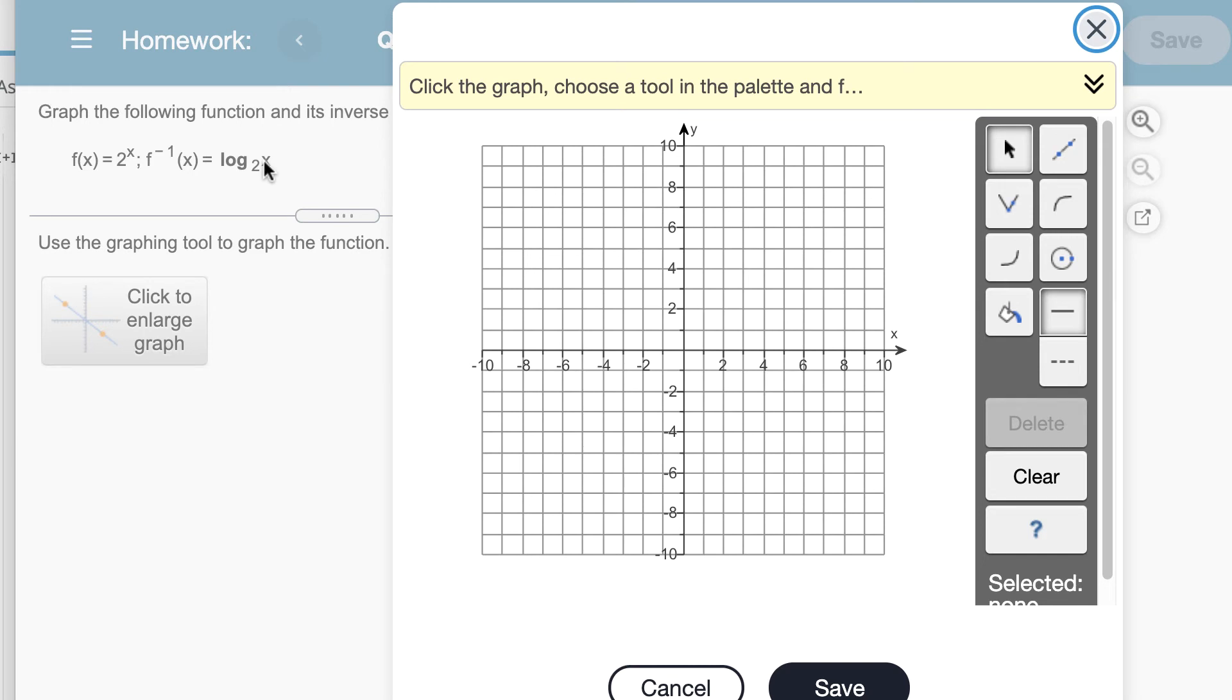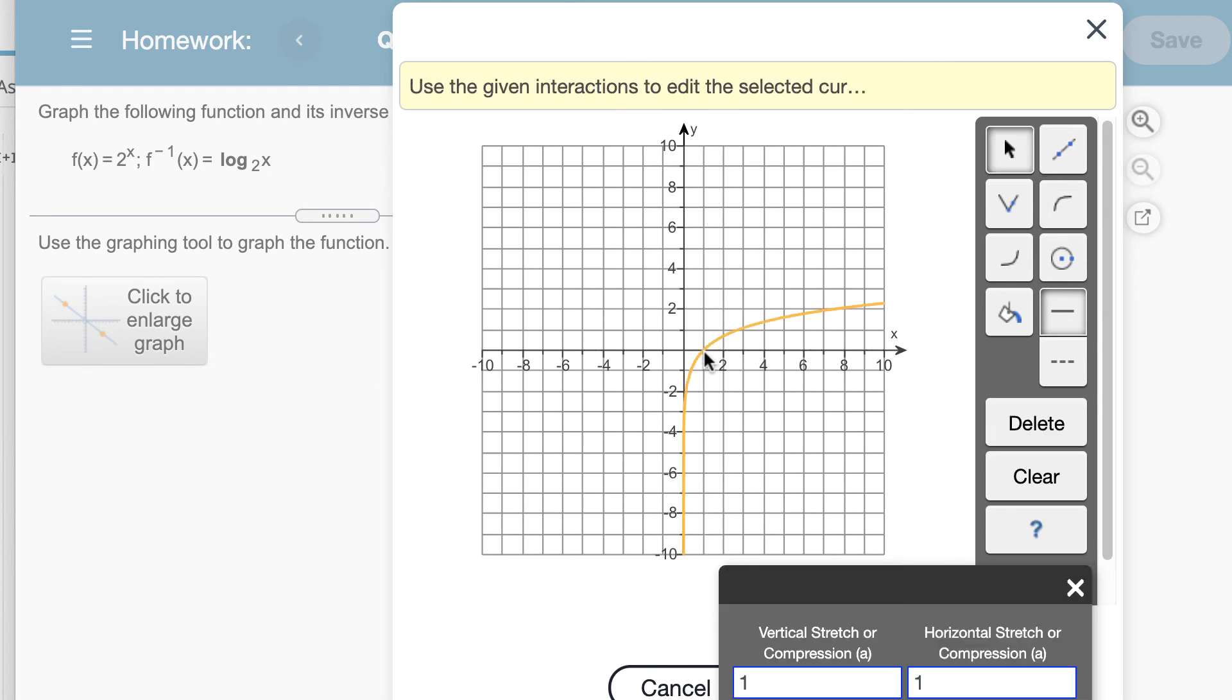I don't have any vertical or horizontal shifts going on here either. So I'm going to select the logarithm graph and click the Logarithm tool here. And every logarithm in its general form passes through the point (1,0). So I'm going to start there.